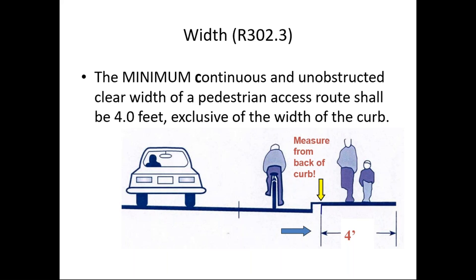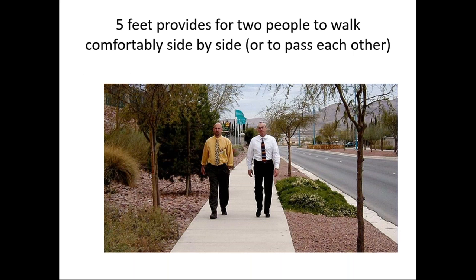When ProAg was being developed, there was considerable debate about the width requirement — advocates pushing for five feet versus four. The truth is the most pedestrian-friendly walkway would be five feet wide: it allows two able-bodied people to walk comfortably side by side and allows two wheelchairs to pass. A number of state and local agencies around the country have adopted five feet as their minimum width, going above and beyond ProAg.